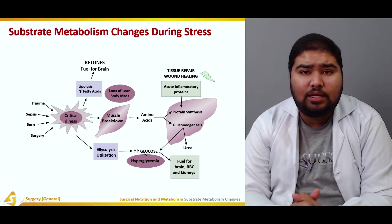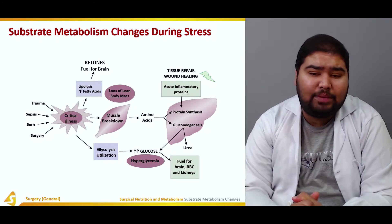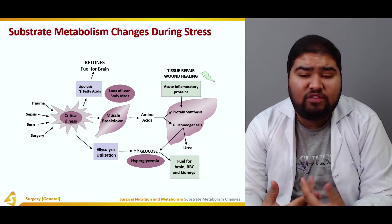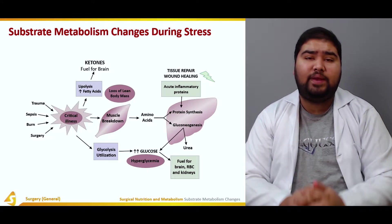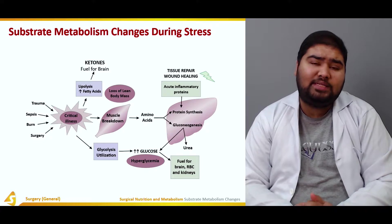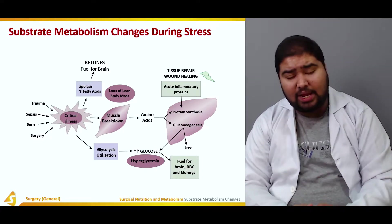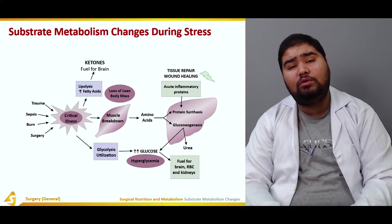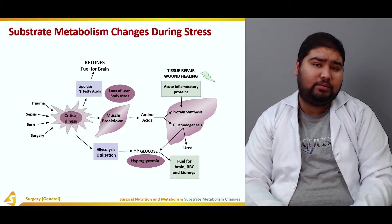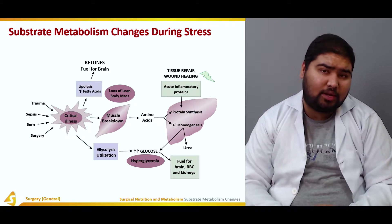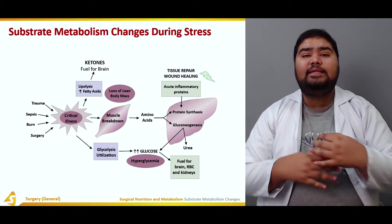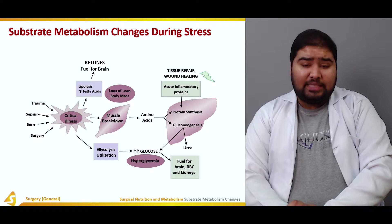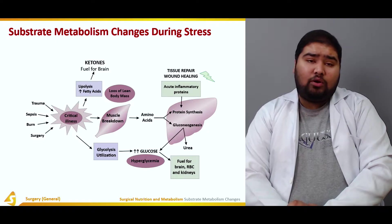The increase in glucose, or hyperglycemia, provides fuel for the brain, the RBCs, and the kidneys. The brain and RBCs use only glucose for their metabolism, so they require a steady supply of glucose. This is accomplished by glycolysis.